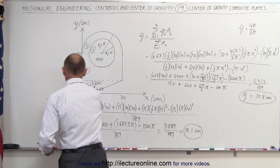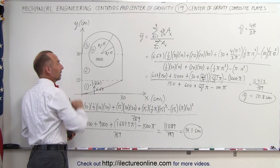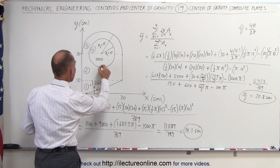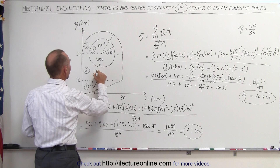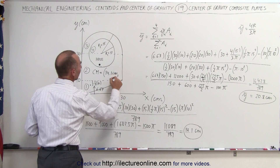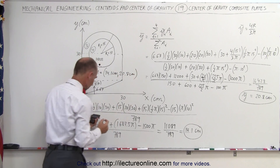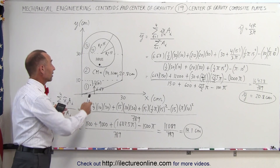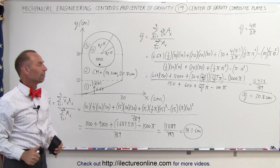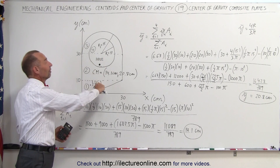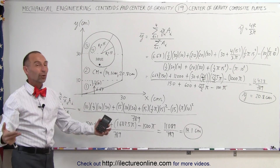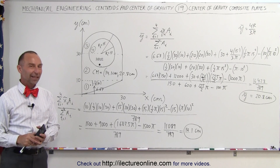So the x-coordinate of the center of mass is 14.1 centimeters, and the y-coordinate is 20.8 centimeters. The center of mass is at (14.1, 20.8) cm. Notice how much easier this composite method is compared to taking slices, integrating, and finding the equations of the boundaries — that would be very difficult. It's much easier to find the center of mass of each section, multiply by area, sum them, and divide by total area.